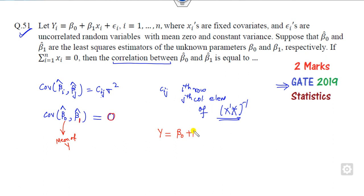If you find the normal equation, what will happen? This is summation of y equals n times beta_0 plus this term. Now you can see the value of this term is given as zero. If you substitute, what is the value of beta_0? This is sum of y divided by n.